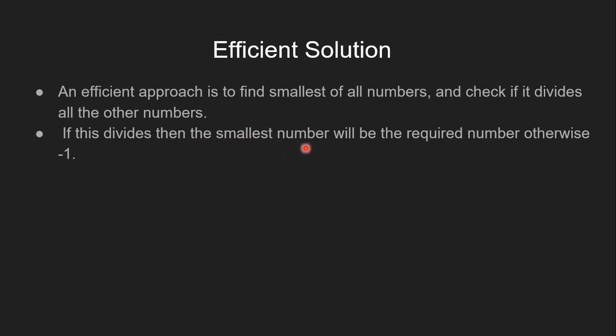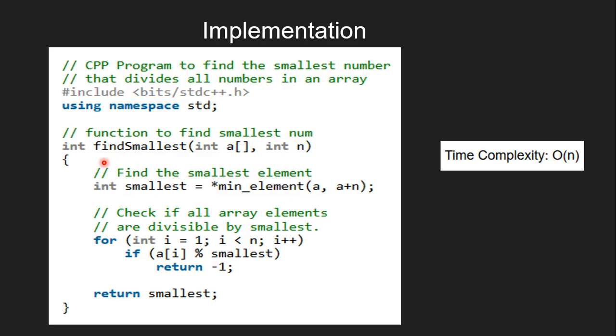Now let's know the implementation of this problem. Here the user-defined function is findSmallest of integer type, which takes two parameters: integer array a and second one is integer variable n. Inside the function, the smallest variable of integer type is assigned by built-in function min_element, which returns the smallest of all the numbers.